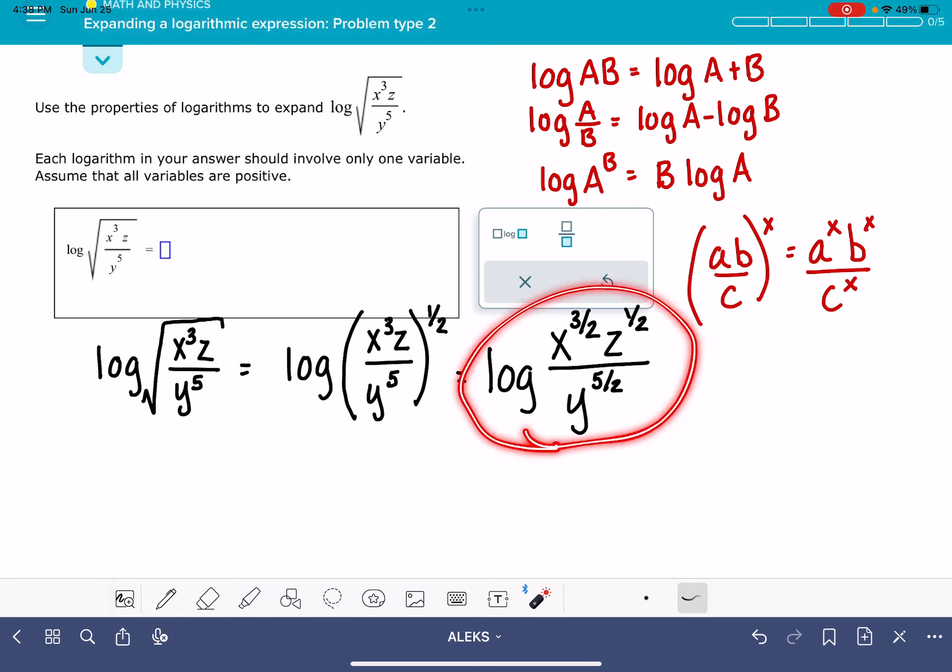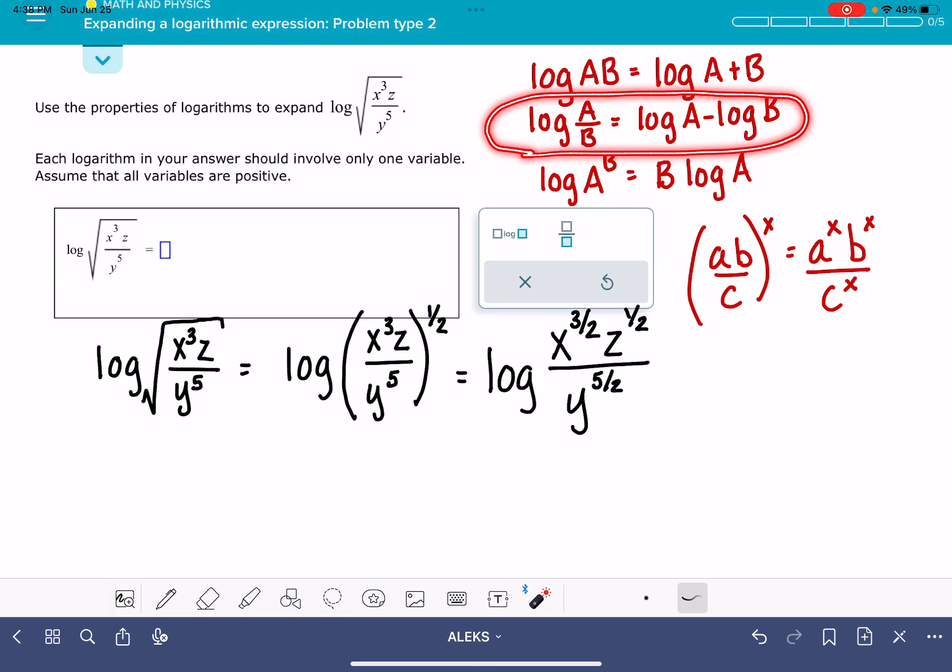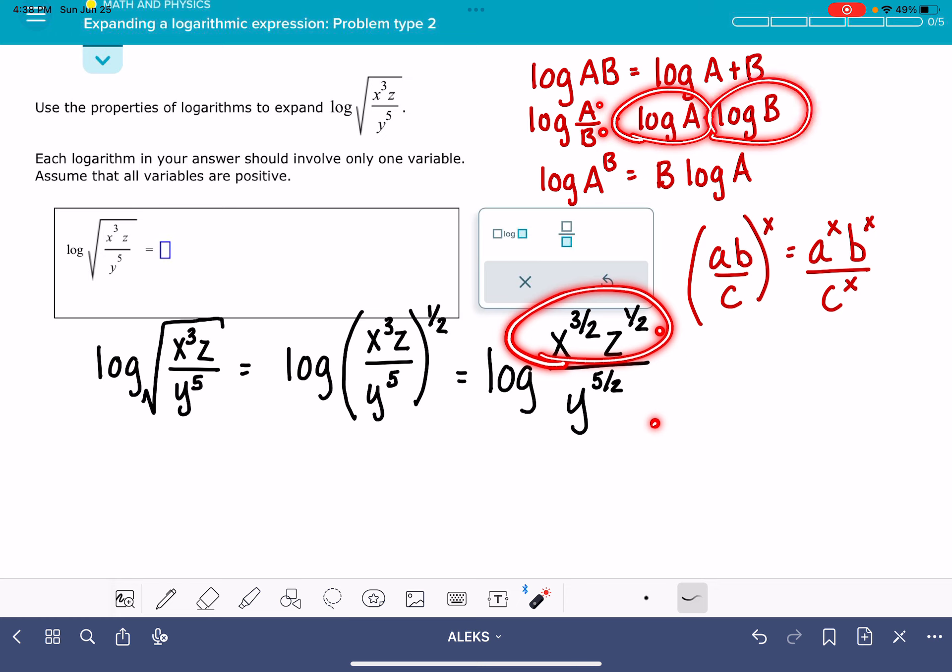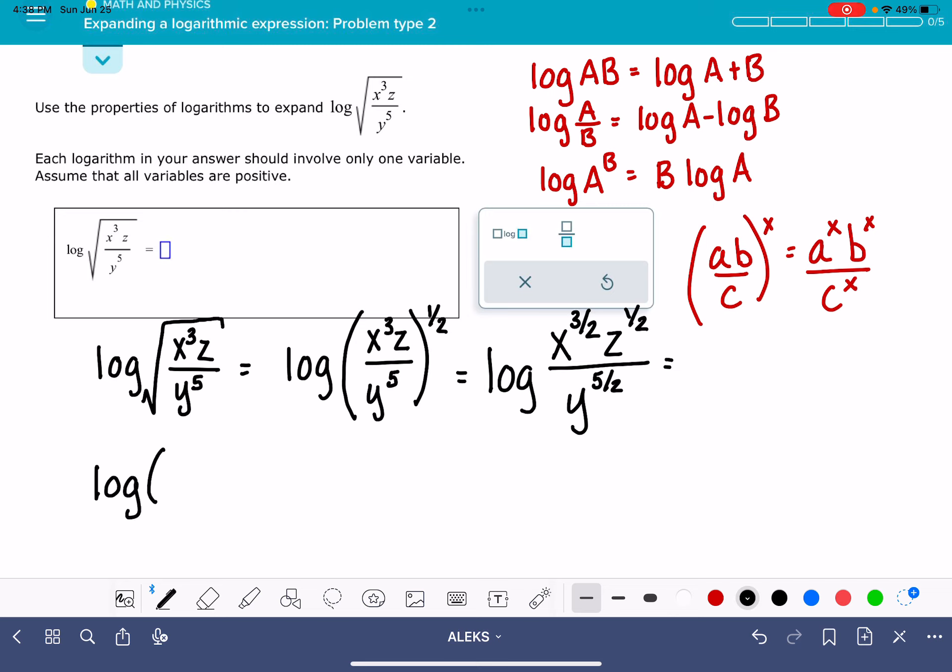Now that I've got this set up, now I'm ready to start applying these different properties of logs. The first one that I'm going to choose to apply is this property, which is going to help me get rid of the fraction in this expression. If I have the log of A divided by B, I can rewrite it as the log of the numerator minus the log of the denominator. So I'm going to rewrite this as the log of X to the three halves Z to the one half minus the log of Y to the five halves.